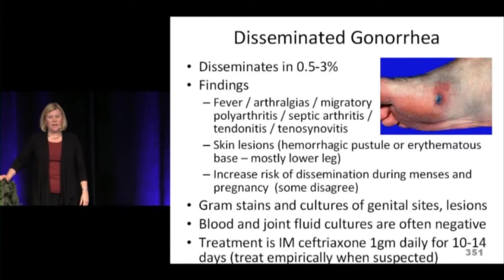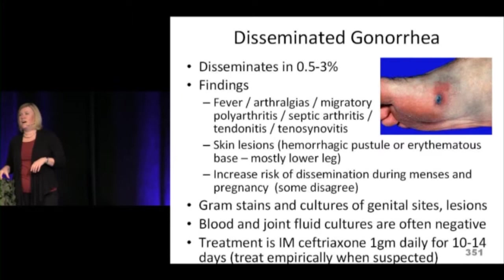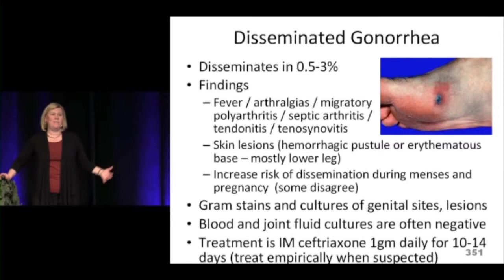When asking the review of systems for patients with this type of septic arthritis, ask about genital discharge, and consider a pelvic exam to look for a gonococcal source. The treatment for disseminated GC is ceftriaxone 1 gram daily for 10 to 14 days. If you suspect disseminated gonorrhea, just go ahead and treat generously.